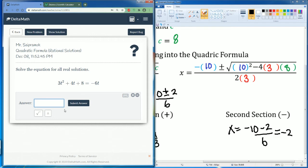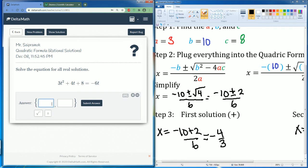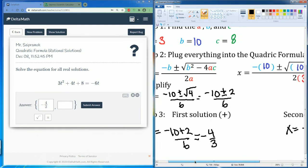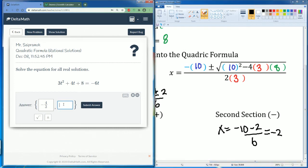So I press that comma. I press a comma on my keyboard to show that there are two solutions. My first one, it's going to be negative 4 divided by 3. And my second one is going to be negative 2.